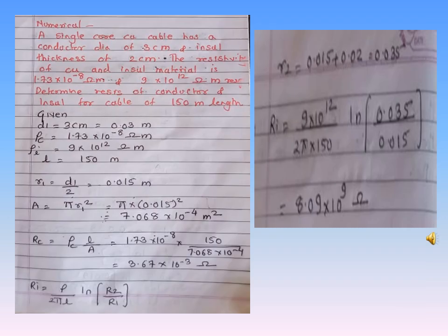One more numerical on a single-core cable: a single-core copper cable has a conductor diameter D1 = 3 cm and insulation thickness of 2 cm. The resistivity of copper is 1.73 × 10⁻⁸ Ω·m and the resistivity of the insulating material is 9 × 10¹² Ω·m. Determine the resistance of the conductor and the insulator for a cable length of 150 meters. Given: D1 = 3 cm = 0.03 m, length = 150 m.